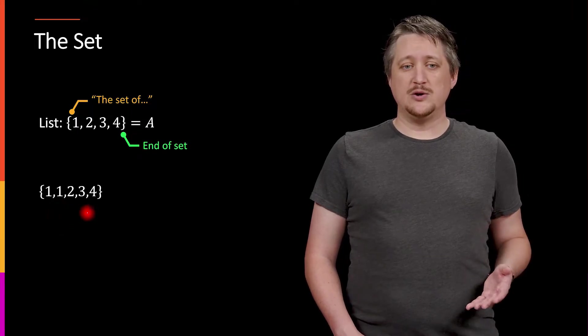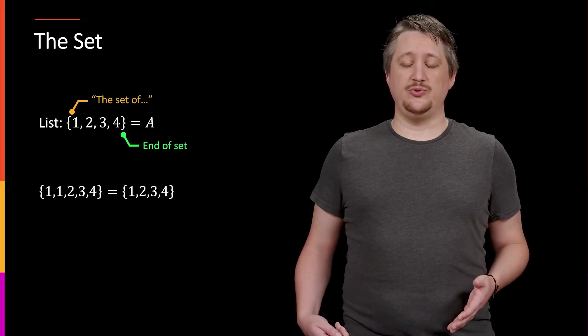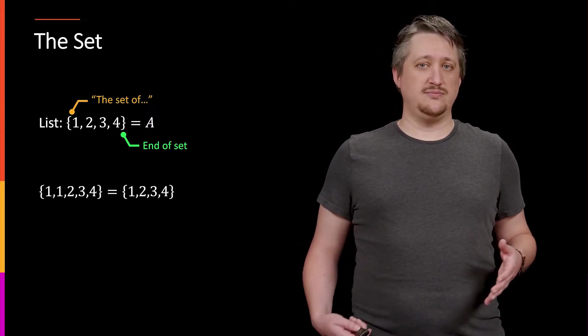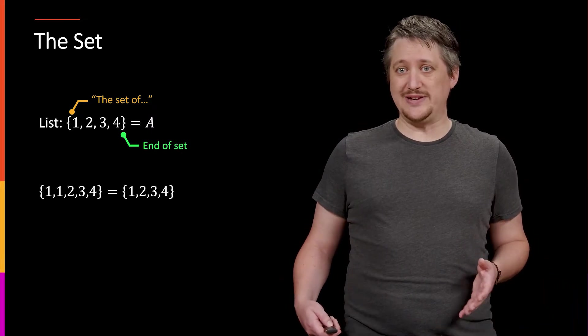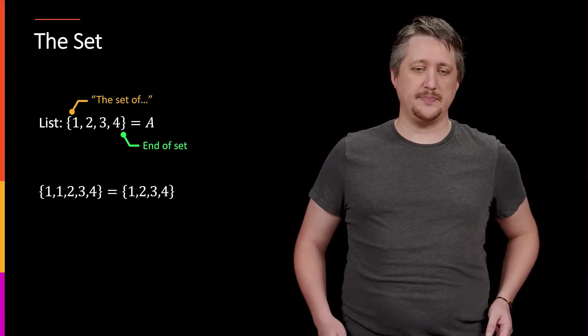Now by convention and by rule, we don't want to have duplicates in a set. So if we had a set, if we tried to list out like one, one, two, three, four, we wouldn't write it that way. Instead, the set for this thing would be just one, two, three, four. So it would be just those unique values, we don't keep track of having it repeat.